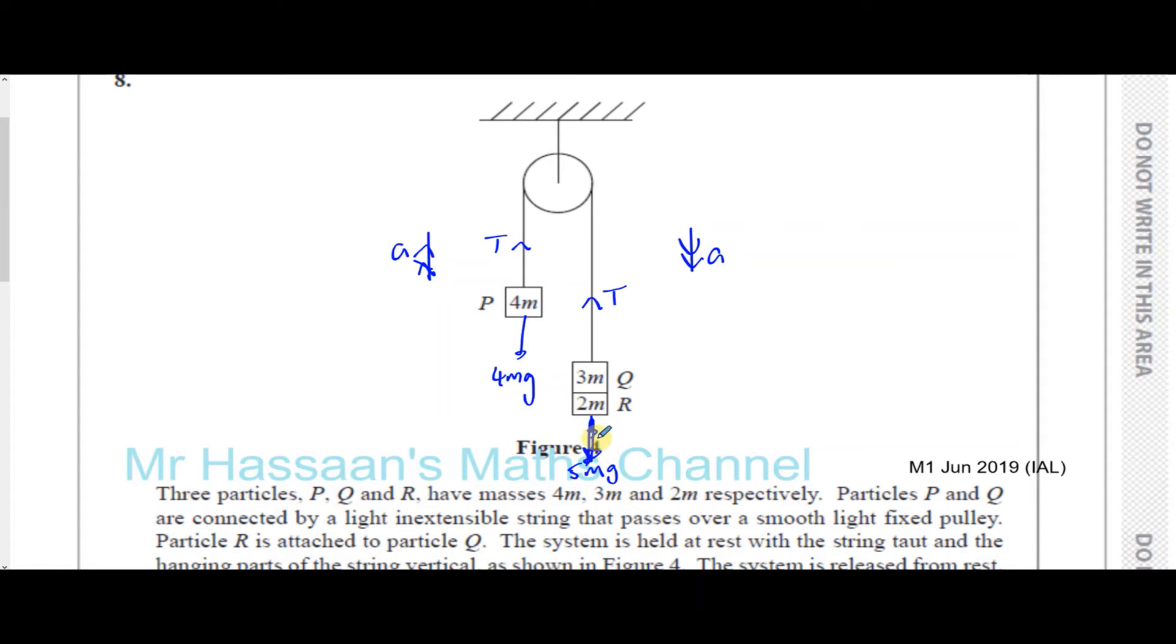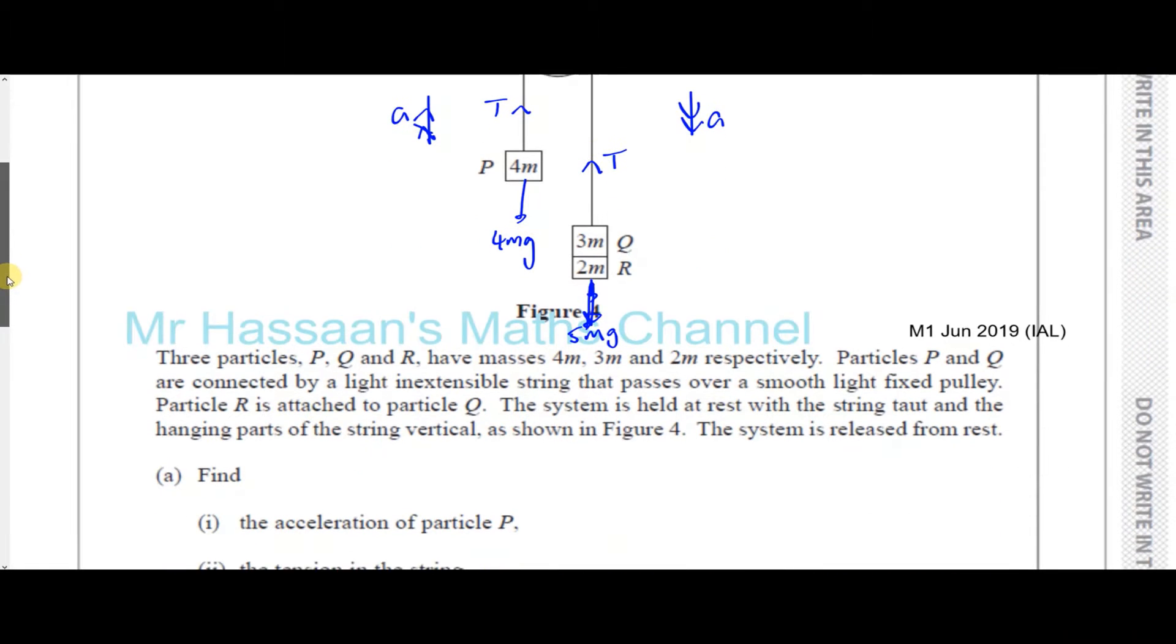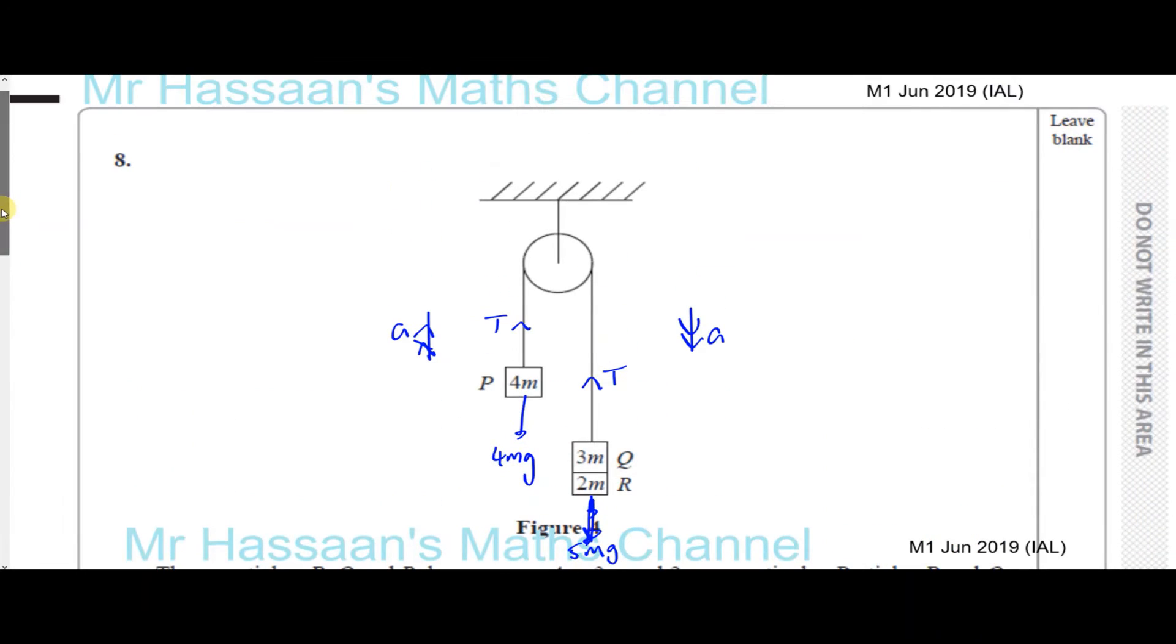The acceleration of particle P and the acceleration of particles Q and R together - everything attached to these strings will have the same acceleration, because it's a light inextensible string. So therefore, I'll just do my working over here for the first part. If I consider particle P, particle P is going to be moving upwards, I'm taking up as positive. What we can say is T minus 4Mg is equal to Ma, which is the mass times acceleration, which in this case is 4Ma. We're using the principle that the resultant force is equal to the mass times acceleration. So that's for particle P.